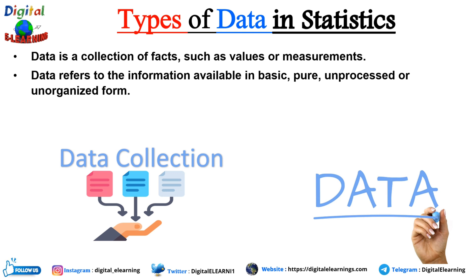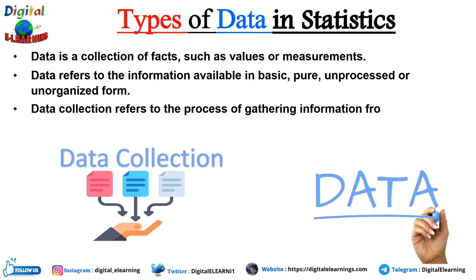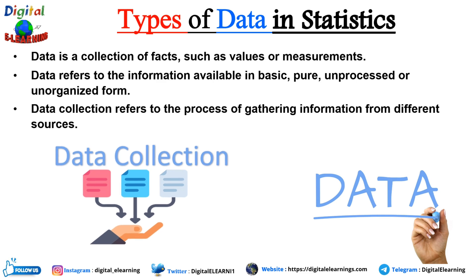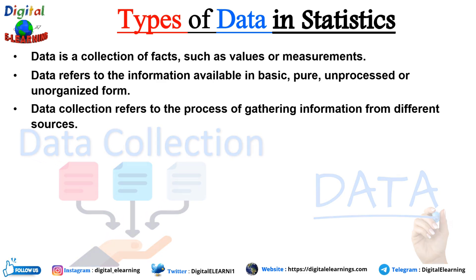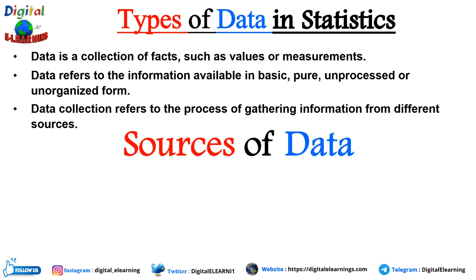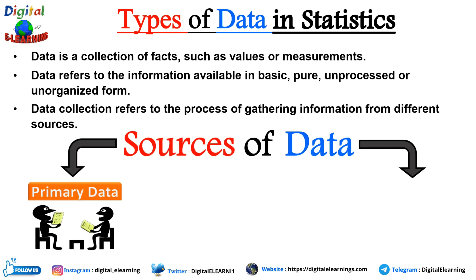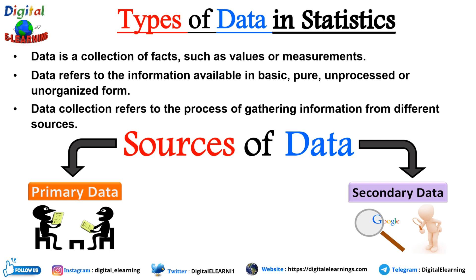Now you must be wondering what is data collection. Data collection refers to the process of gathering information from different sources about a particular topic. There are basically two different categories of data collection, which are categorized as sources of data — we call them primary data and secondary data. This is our main topic for today, and we'll look at the difference between primary and secondary data along with some examples.